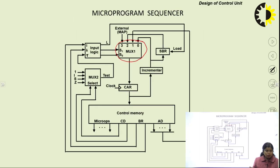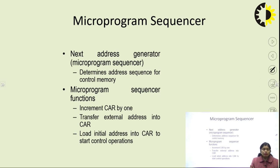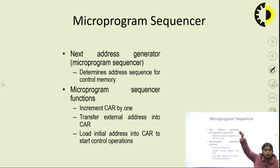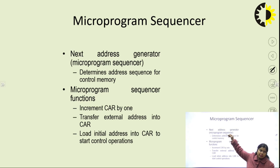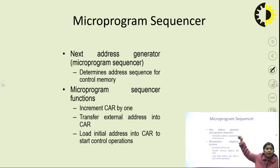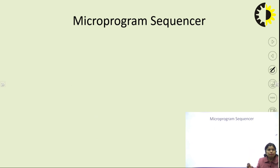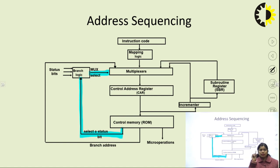The micro program sequencer determines which particular next address is going to execute in the control memory. Sequencing is the method to find the next address. The four sources feeding the multiplexer are: incremented CAR, branch address from control memory, subroutine register address, and external mapping. The output of the first multiplexer feeds into the CAR as input, which then goes to the control memory.